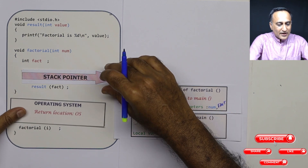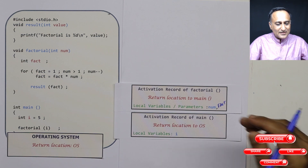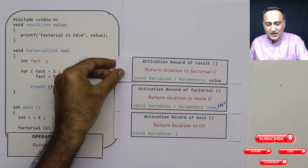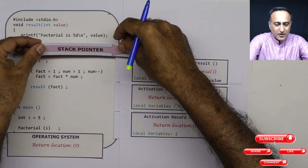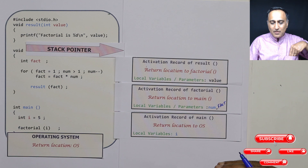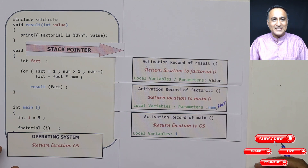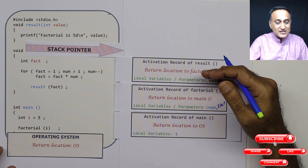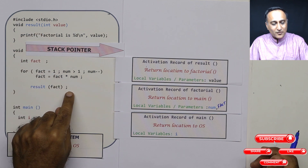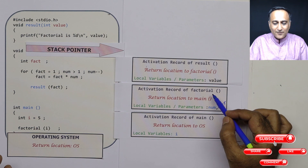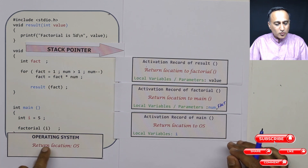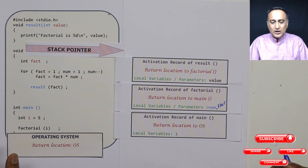Since factorial in turn calls result, when result is called, the next activation record in the stack box is the record for result. The stack pointer moves to the top of this record. So now we have: from the operating system, main was called; main called factorial; factorial called result. Result is currently executing. Result has a return location pointing back to factorial. After completing result, it returns after the semicolon in factorial. After factorial completes, it returns to main. After main completes, it returns to the operating system.